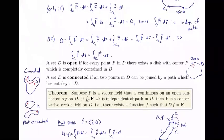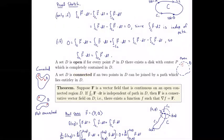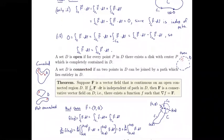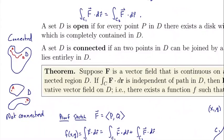A set D is connected if any two points in D can be joined by a path which lies entirely in D. A connected set allows us to form a smooth or piecewise smooth curve between any two points a and b. By contrast, a set that is not connected is comprised of disjoint regions where no path from a point in one region to a point in another can stay entirely within D.